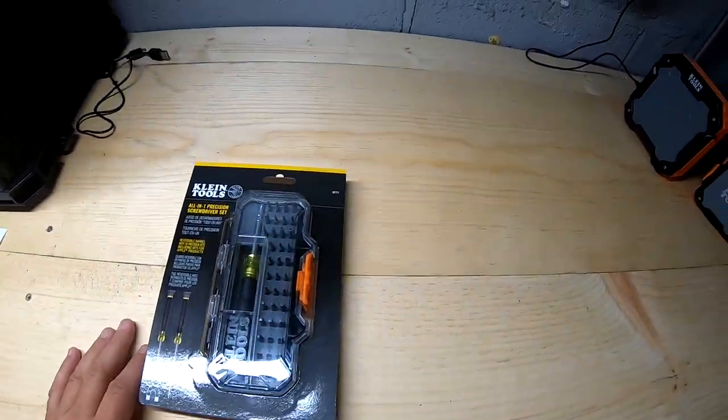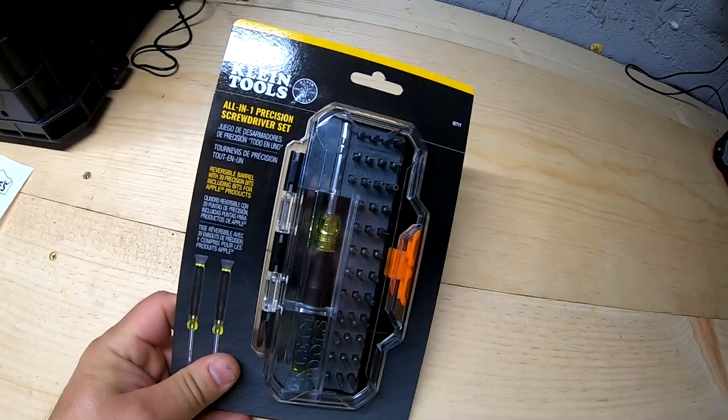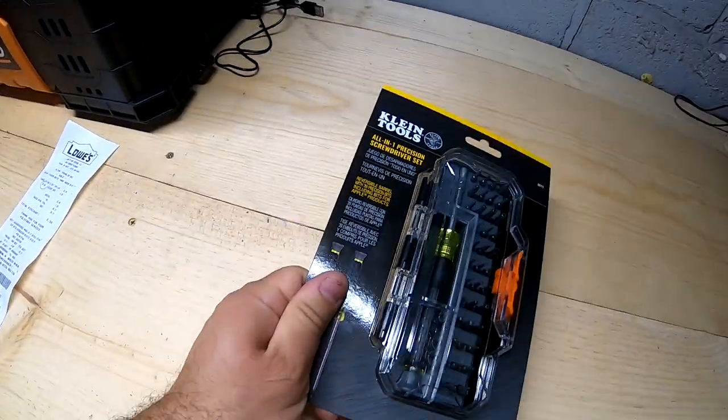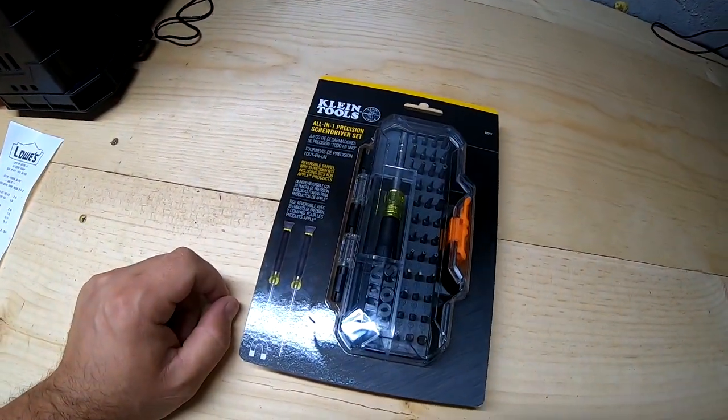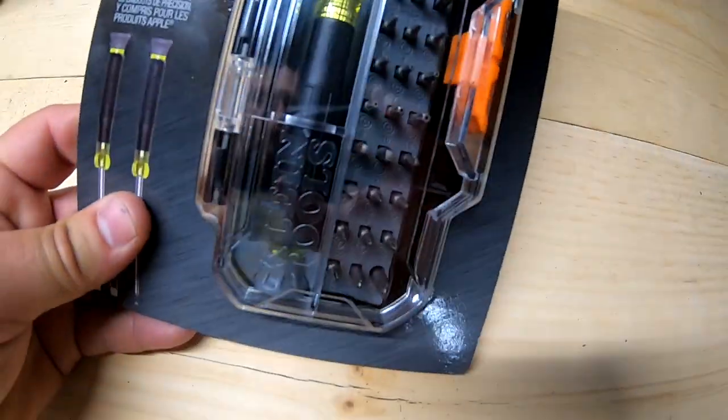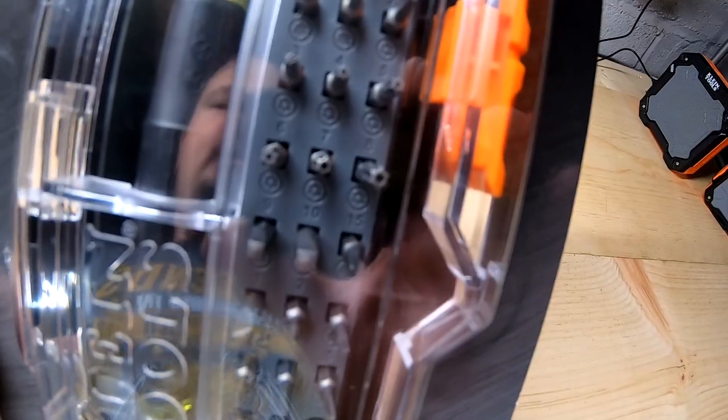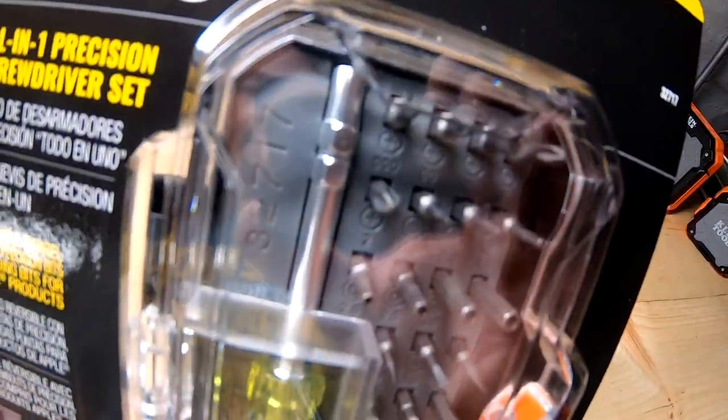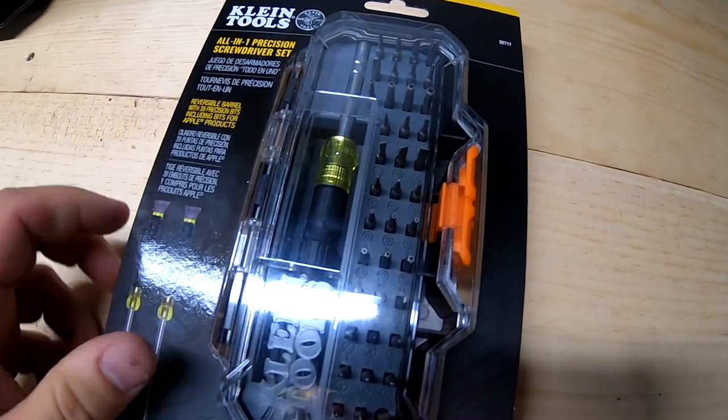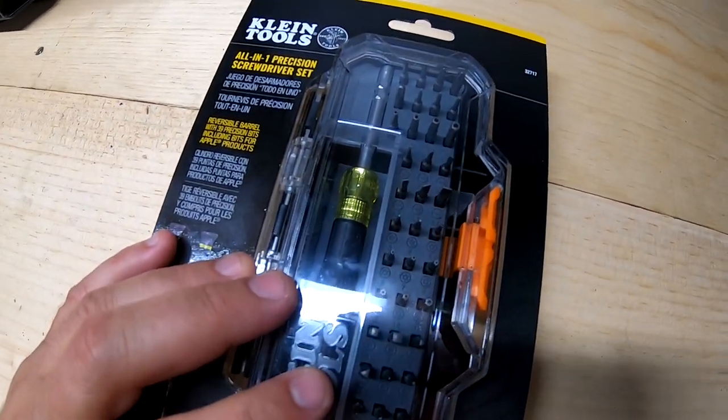All right, so for this video we have a new tool coming to Home Depot for Klein. It's an all-in-one precision screwdriver set, more for electronic type of stuff. It's got a reversible barrel, 39 different bits, including bits for Apple products.